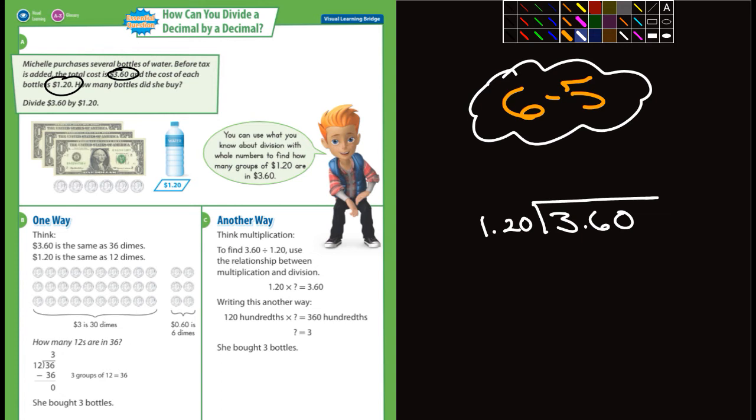Let's come over here and look at what they're showing us. It says one way: think of $3.60 as 36 dimes, because 36 dimes is $3.60. And then it says $1.20 is the same as 12 dimes. So how many 12s are in 36? Well the answer is three. So she bought three bottles.